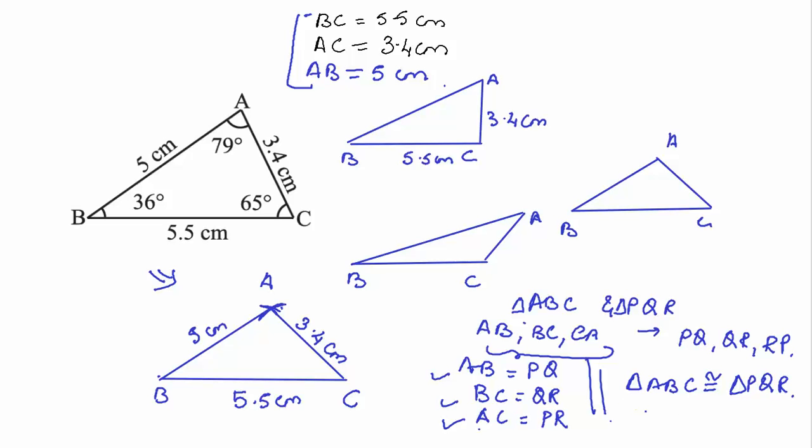For the correspondence of ABC corresponding to PQR, that means A is falling on P, B is falling on Q, and C is falling on R. So let's summarize this.